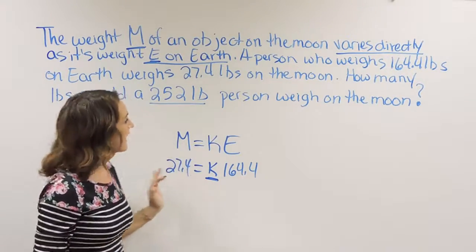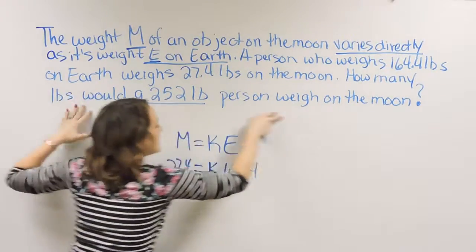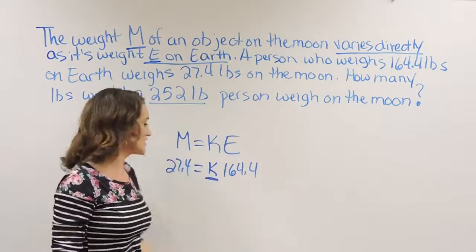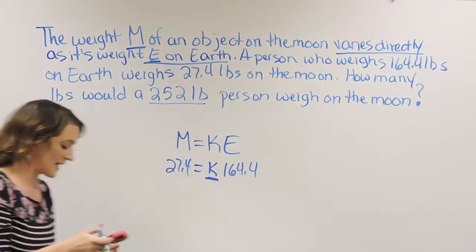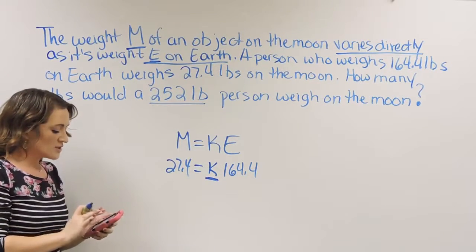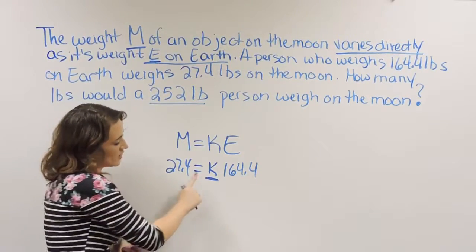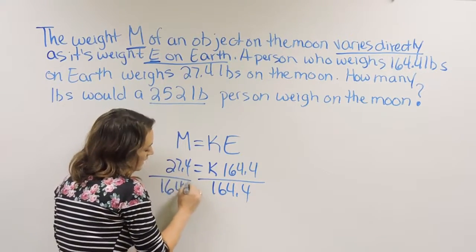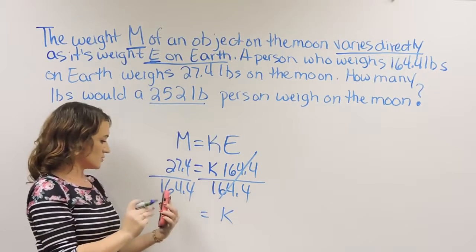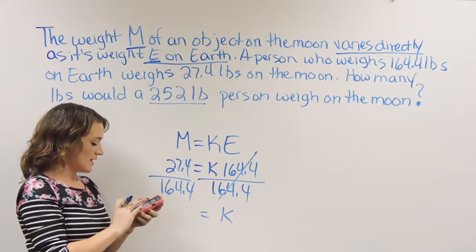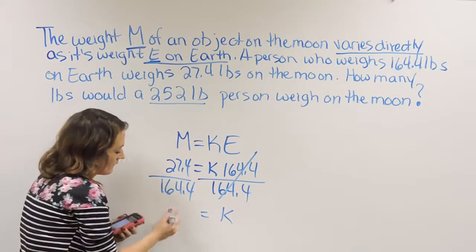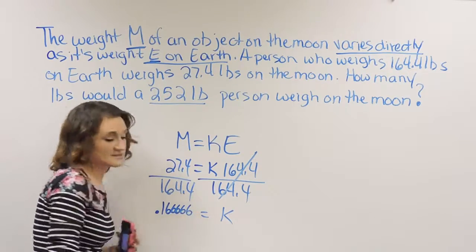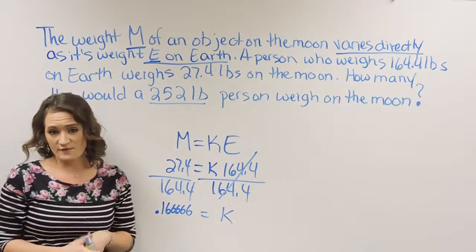Once we solve for K, we'll look at the last sentence to calculate what the problem is actually asking. I'll grab my calculator. To solve for K, we divide both sides by 164.4, so K equals 27.4 divided by 164.4. I'm getting 0.1666666 and so on — that's our constant of variation.